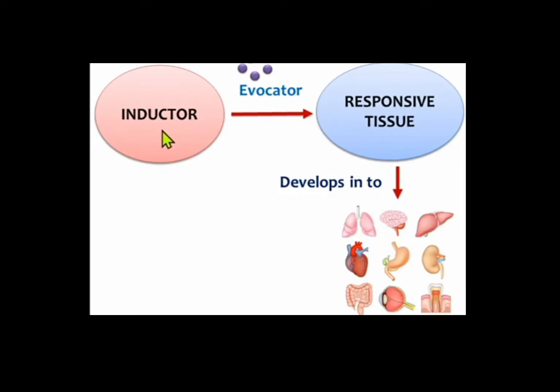Embryonic induction is the morphogenetic effect in which one embryonic tissue transmits a chemical stimulus that influences another part of the embryo to develop into a structure. Without embryonic induction, the structure won't be formed. It is a type of tissue interaction.